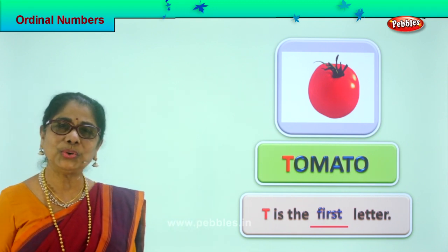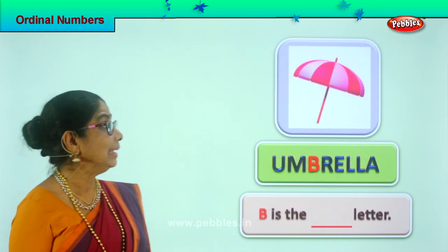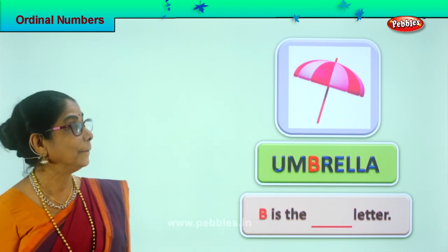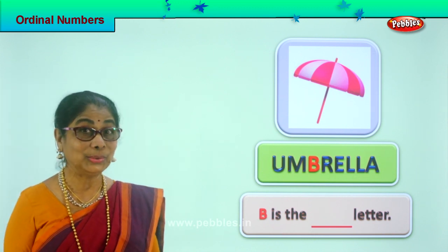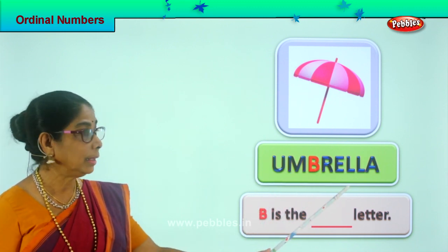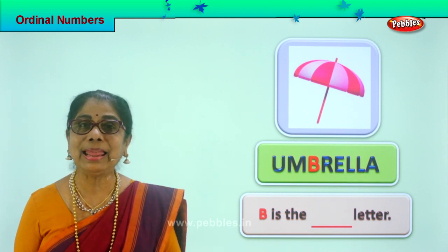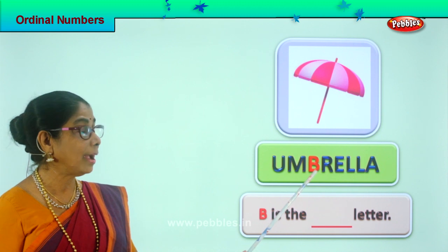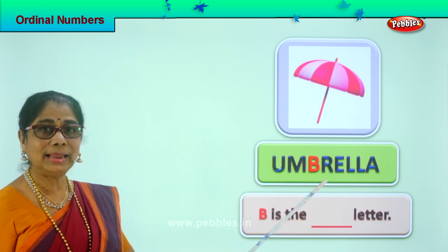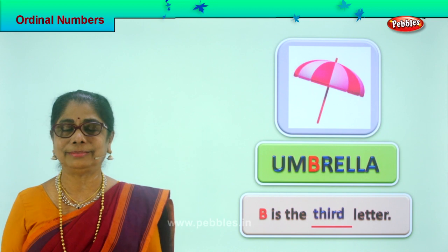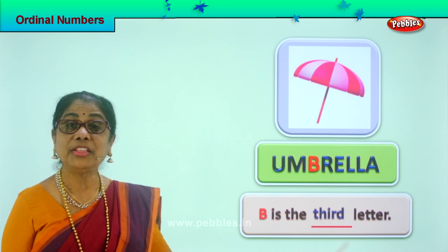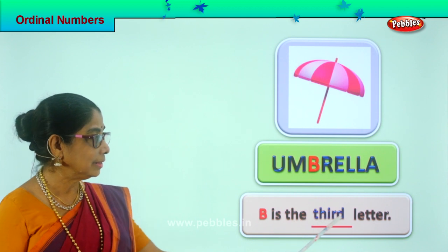Let's look at another picture. See what you have — a lovely colored umbrella! Pink and white umbrella. When do you use an umbrella — to go out in the sun or in the rain? Spell umbrella: U-M-B-R-E-L-L-A. Which is the colored letter? B. What is the ordinal position? First, second — B is the third letter. Spell third: T-H-I-R-D, third. Read: B is the third letter.